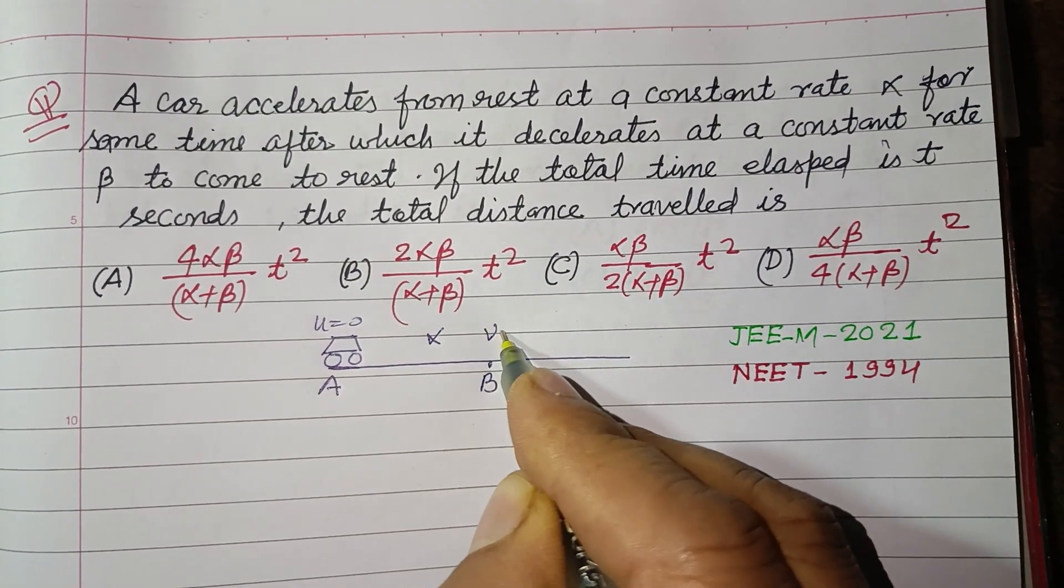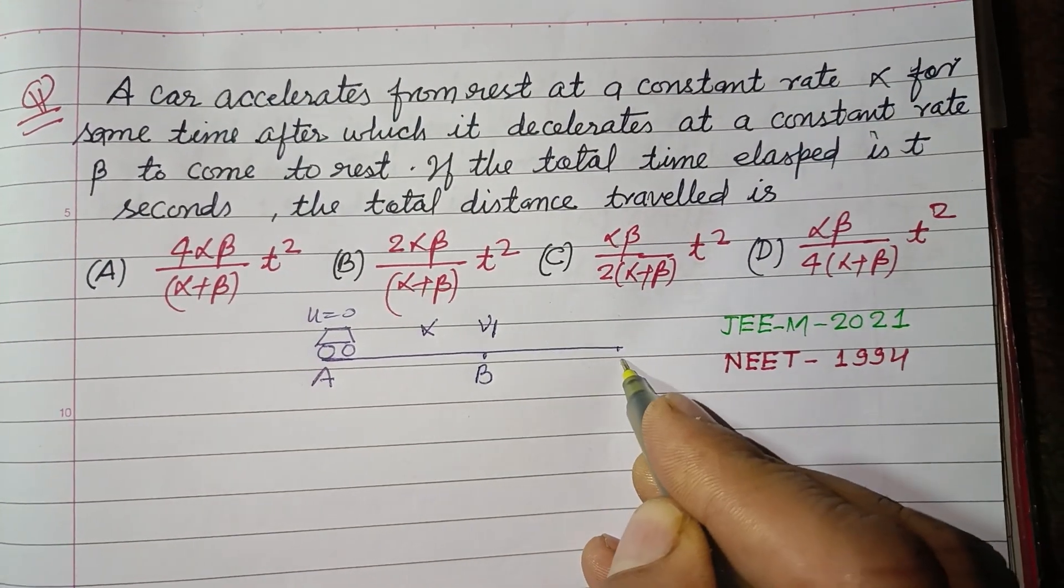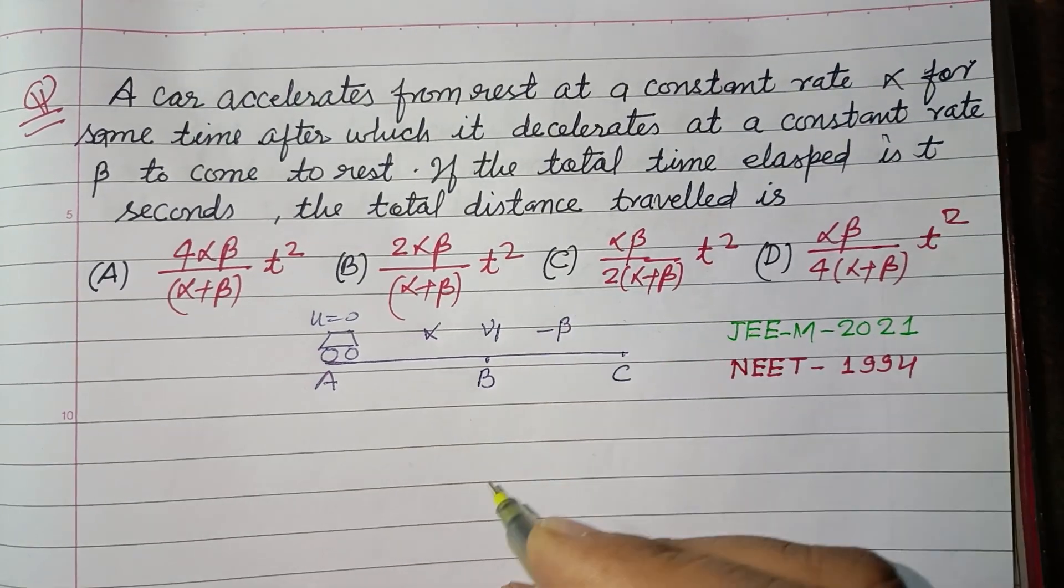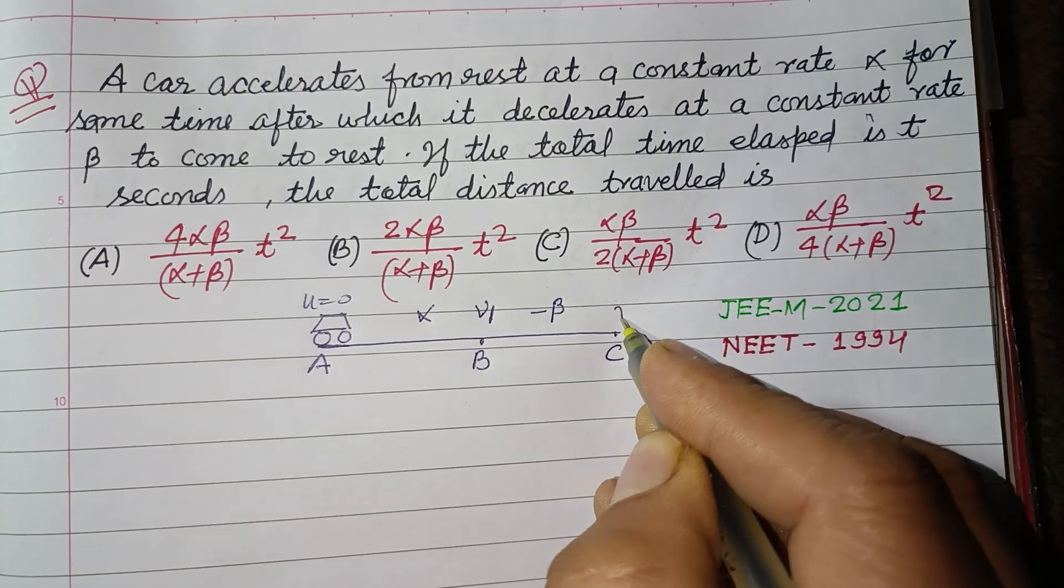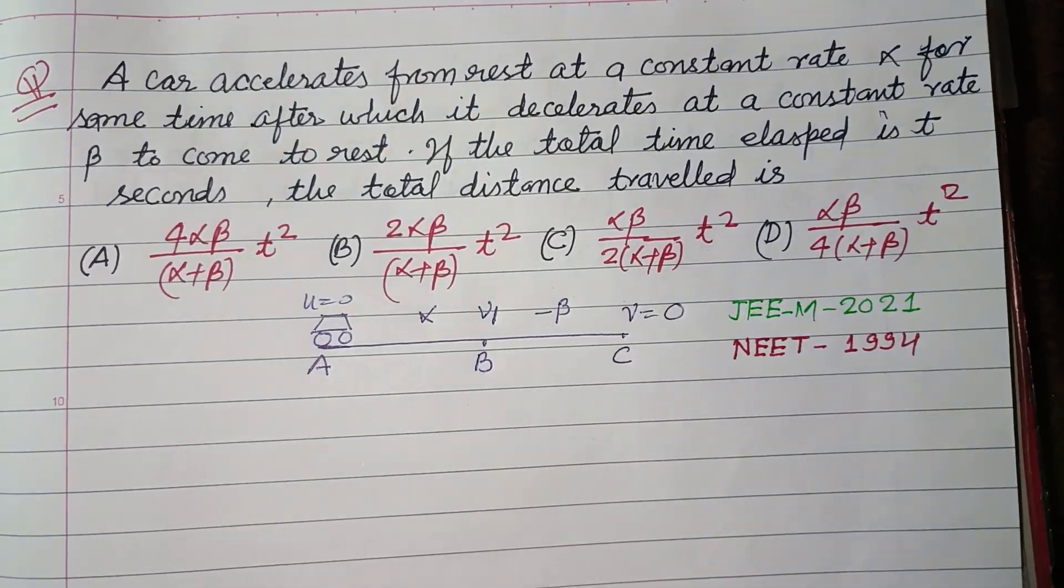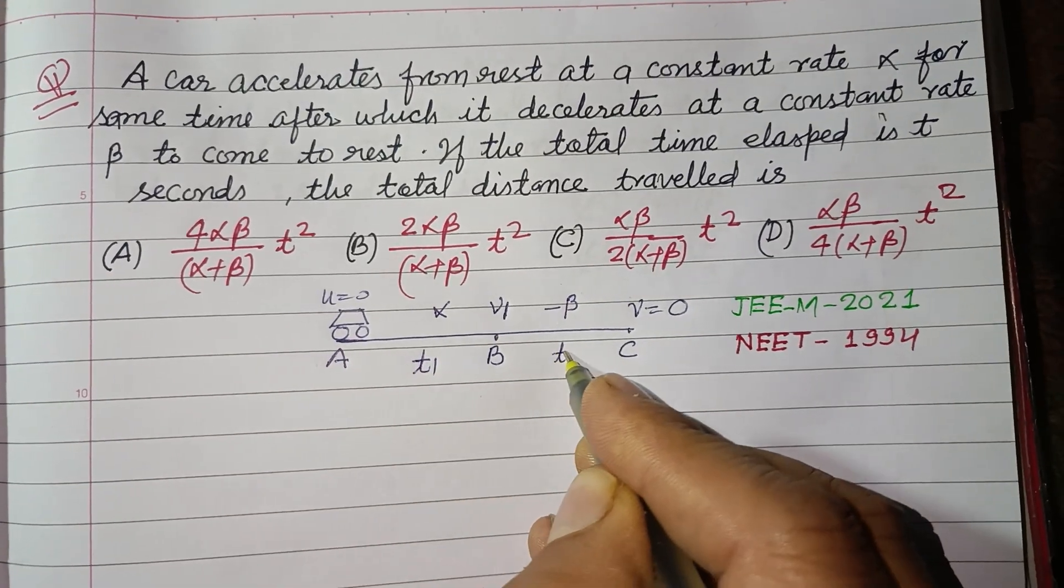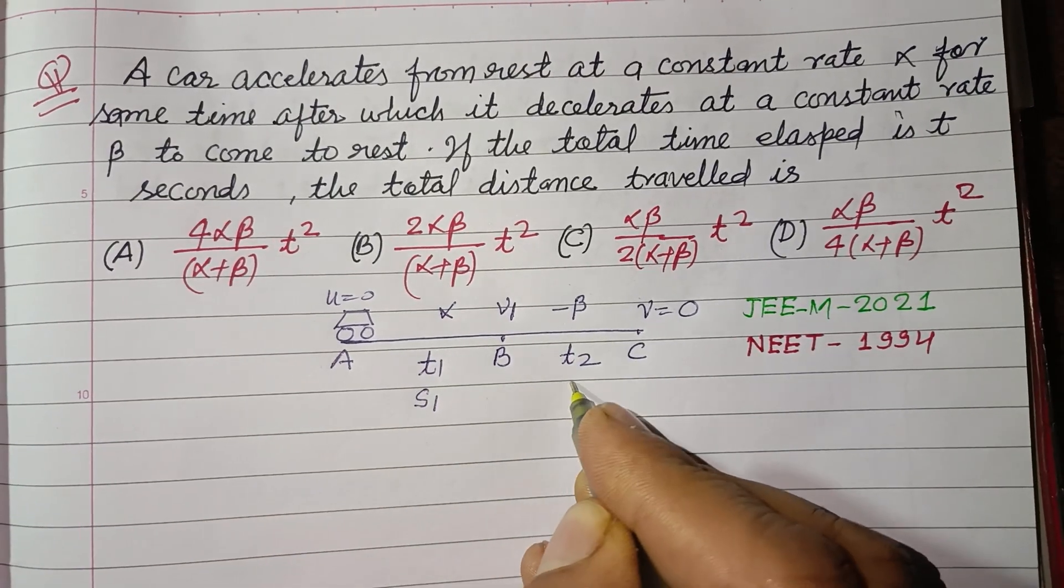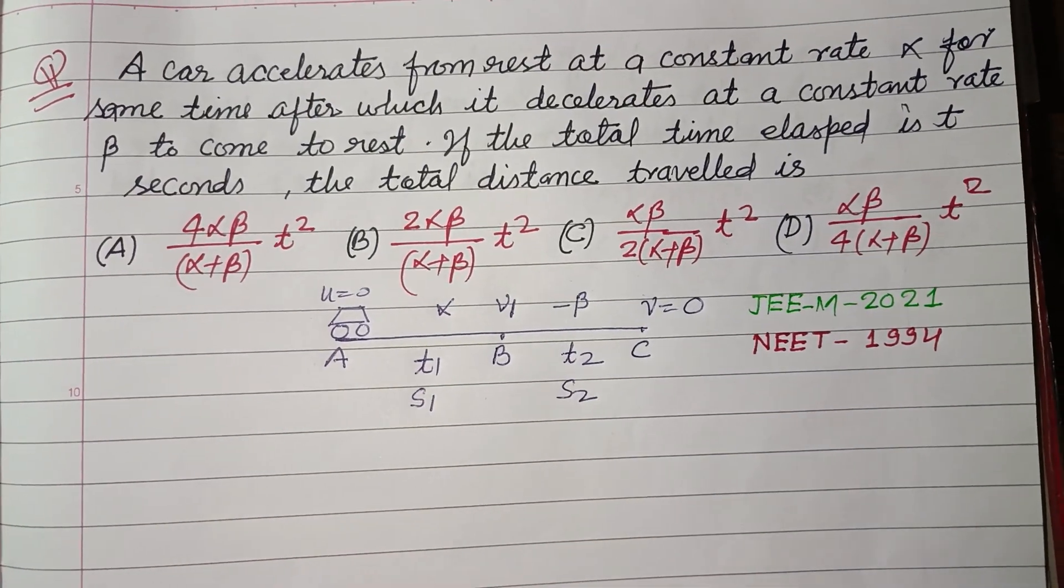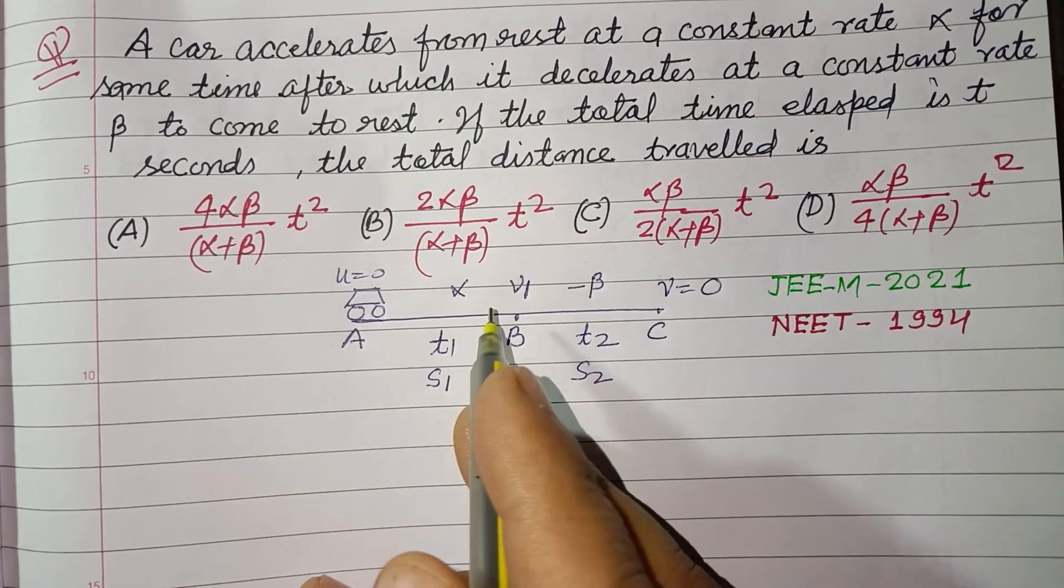Its velocity at B is v₁, and finally it reaches point C with retardation or deceleration -β, and its final velocity becomes zero. Here the time is t₁, this is time t₂, this distance is s₁, and this distance is s₂. After making the figure, we take its velocity.